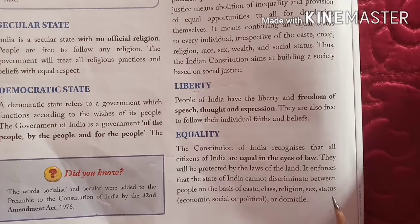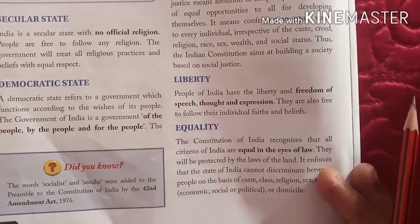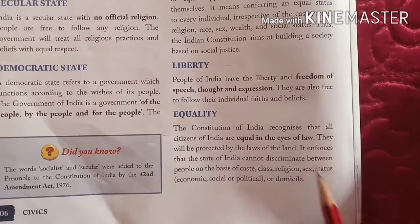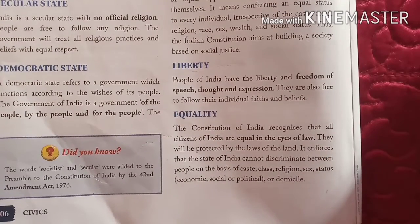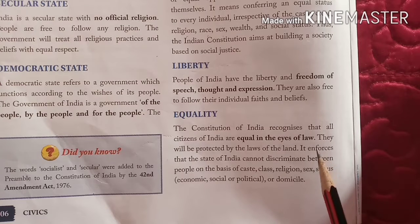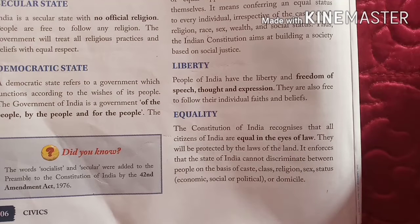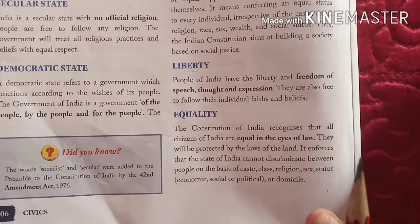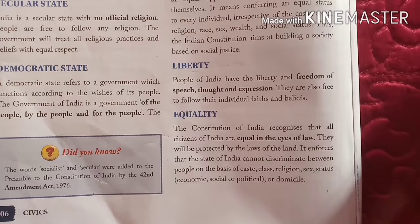The third objective is Equality. The Constitution does not discriminate between people on the basis of caste, class, religion, sex, status or domicile. Every citizen is equal in the eyes of the law, and no discrimination will be made on the basis of caste, creed, color, religion, race or sex.